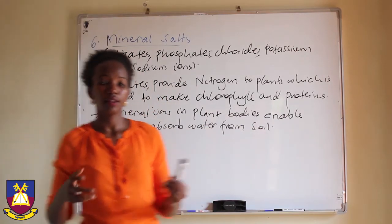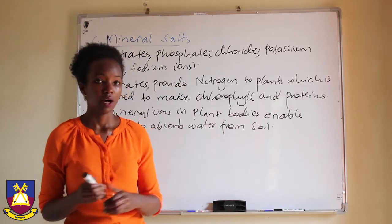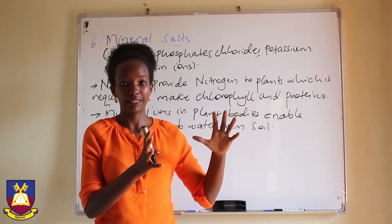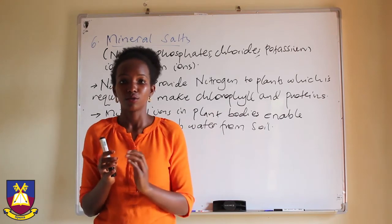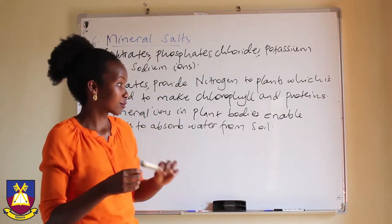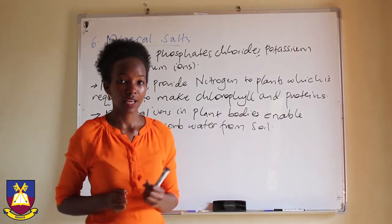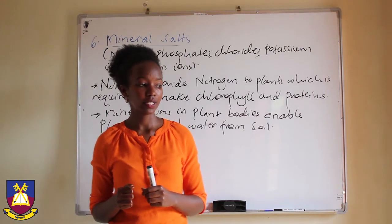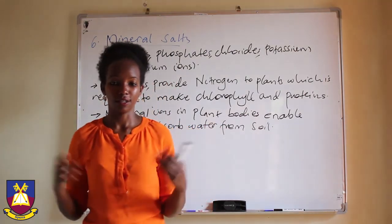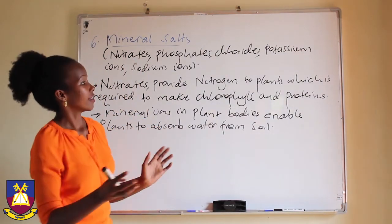When a plant takes in minerals into its body through the roots, water follows, because water always moves from a region where it is in high concentration to a place where it is in low concentration — in other words, water moves to where there are more ions. So plants collect those ions, accumulate them within their body, and then water follows naturally. That is the water they need to carry out their different life processes.